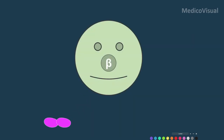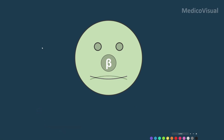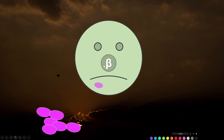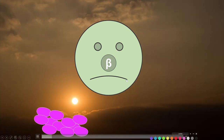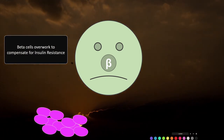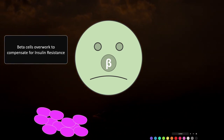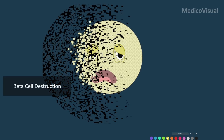Normally, beta cells happily continue secreting some amount of insulin, but when there is insulin resistance, these beta cells have to ramp up the production and release of insulin. They work day and night to release so much insulin, overworking to compensate for insulin resistance, and as they overwork they get tired.